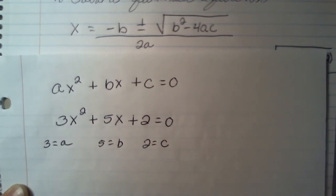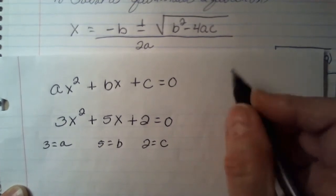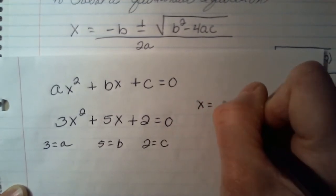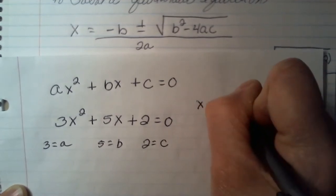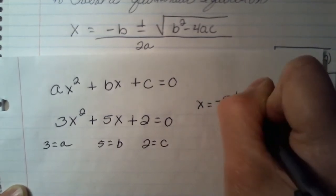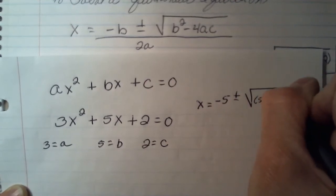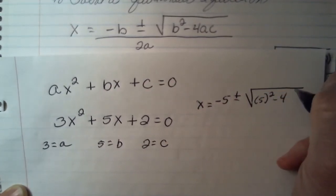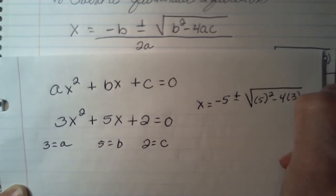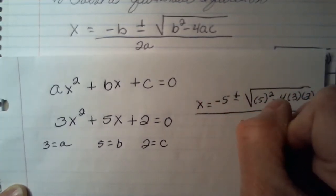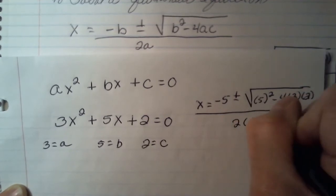Now that I have the values of a, b, and c, I simply just plug those in by formula. So in place of my b, I'm going to put 5. The opposite of 5 is negative 5, plus or minus the square root of 5 squared minus 4 times a, which is 3, times c, which is 2, divided by 2 times the value of a, which is 3.